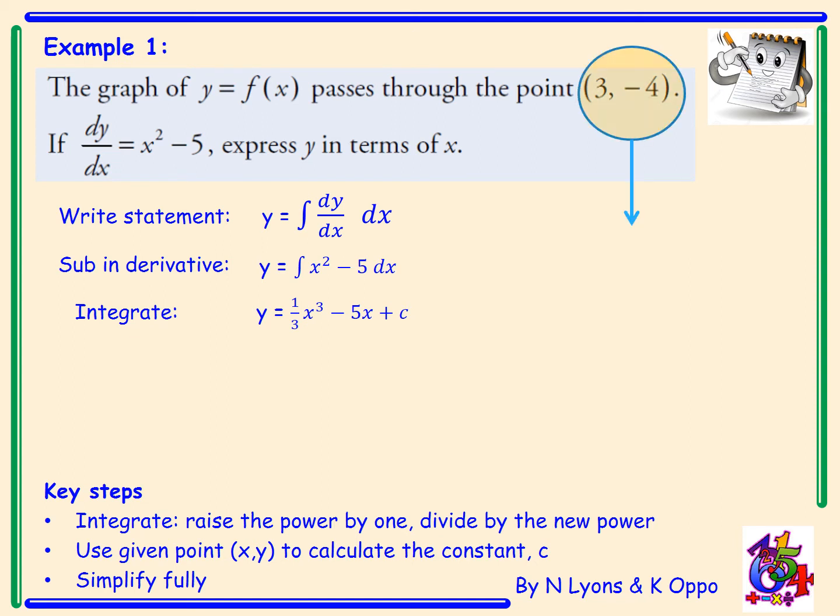Now, we've been given extra information, (3, -4). When you're given a point, what you've really been told is a value for x and a value for y. So when x equals 3, y must equal negative 4. I'm going to sub them into my equation for y, and that's going to give me c.